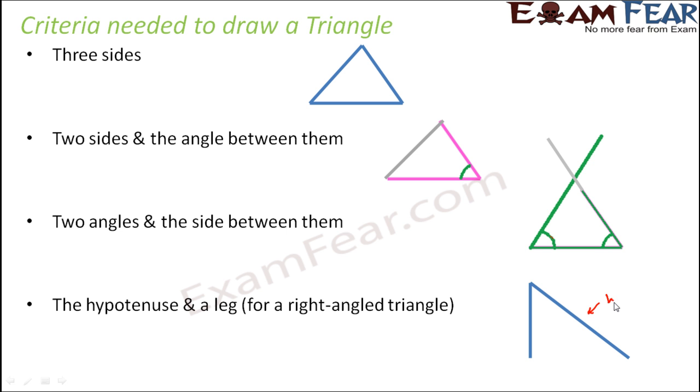Now in the right angle triangle, this is the hypotenuse. Hypotenuse is that side which lies exactly opposite to the right angle. So let's say this is a right angle triangle. So this is 90 degrees. So the side opposite to 90 degrees, this side, which is nothing but the hypotenuse.